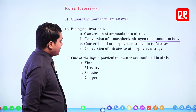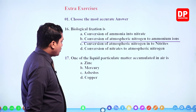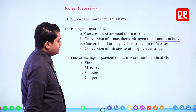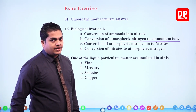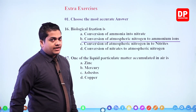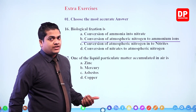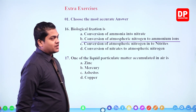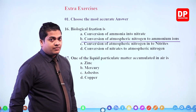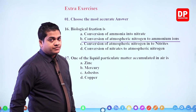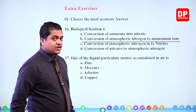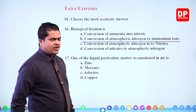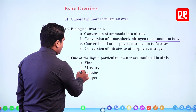Question 17: one of the liquid particulate matter accumulated in air is — zinc, mercury, asbestos, or copper. Zinc is a metal available as a solid at room temperature, so incorrect. Mercury is also a metal but available as a liquid at room temperature — that should be our answer. Asbestos is particles, not a liquid; copper is also not a liquid. So our answer should be mercury.